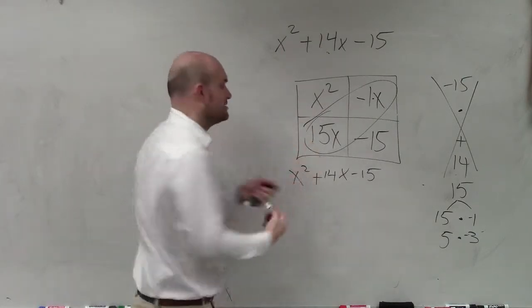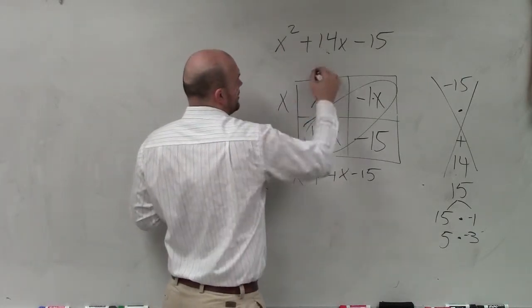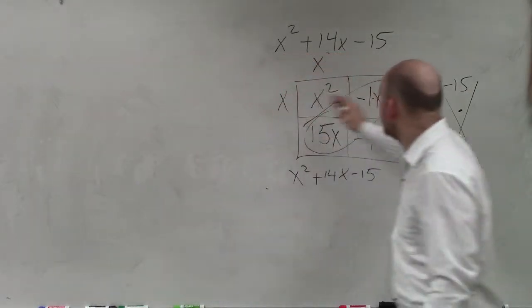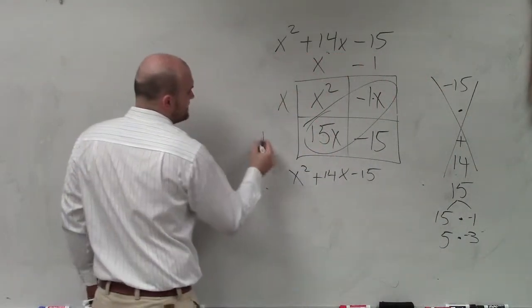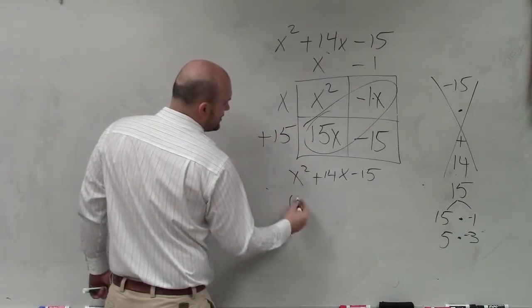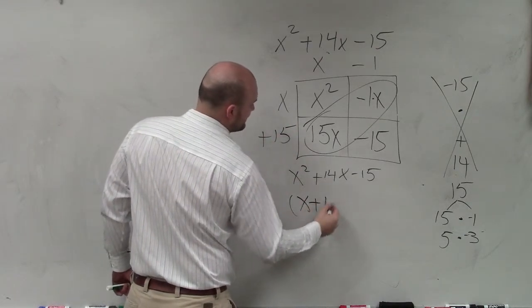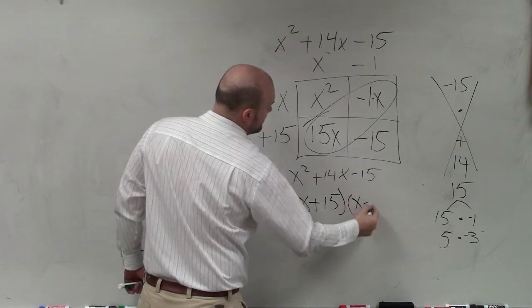So now, let's work backwards. x times x is x squared. x times what gives you negative 1x? Negative 1. x times what gives you 15x? 15. So now, my product is x plus 15 times x minus 1.